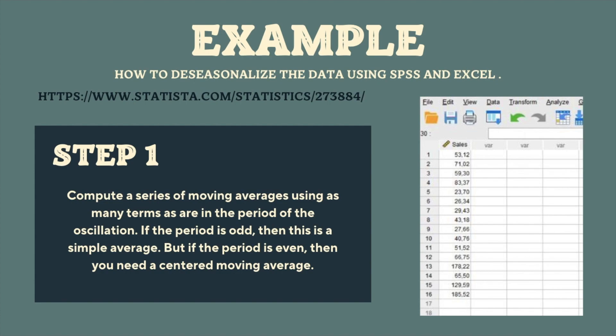There are four main steps to de-seasonalize the data. The first step is to compute a series of moving averages using as many terms as there are in the period of oscillation. If the period is odd then this is a simple average, but if the period is even then you need a centered moving average. Because in this example the period is even, we need to compute the centered moving average.